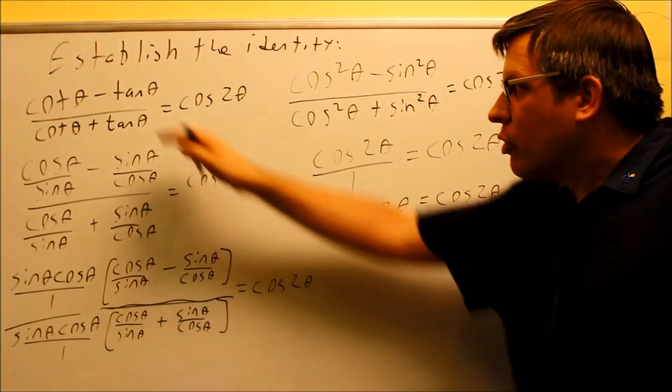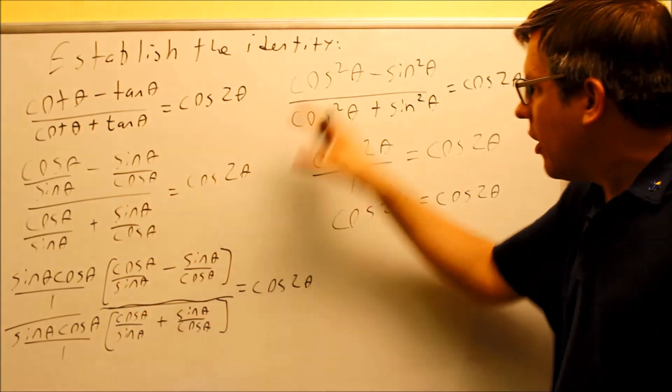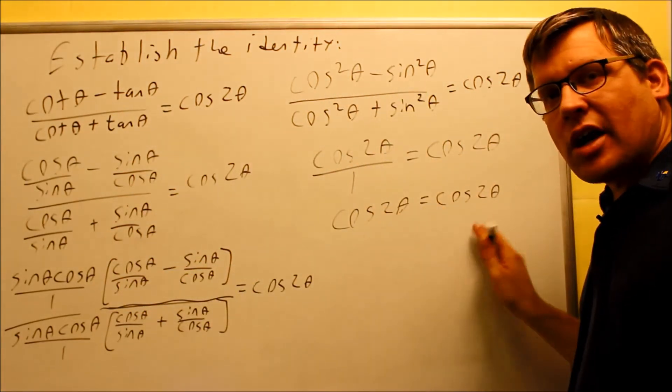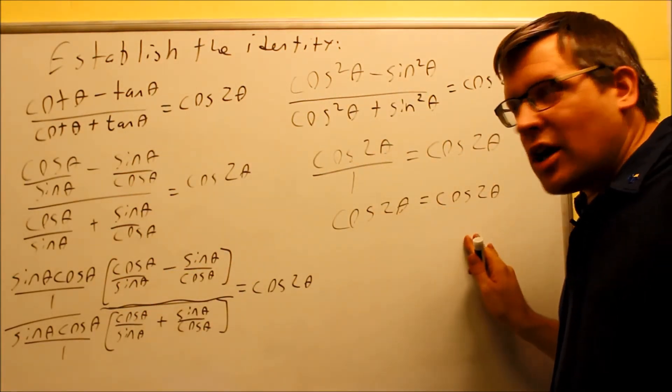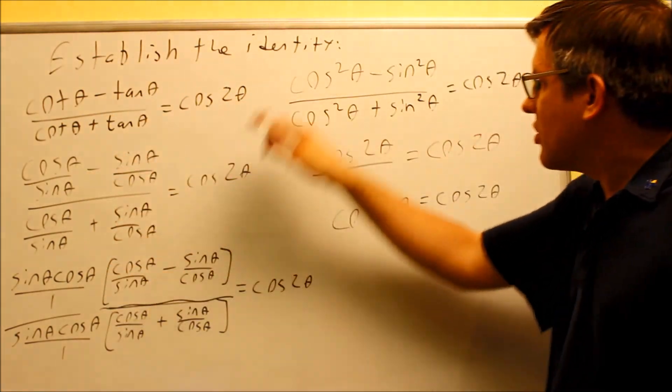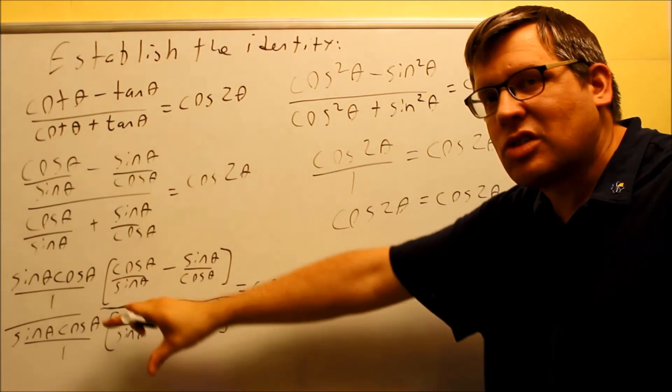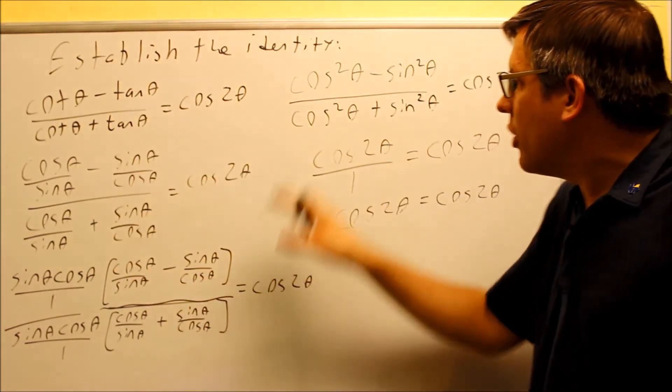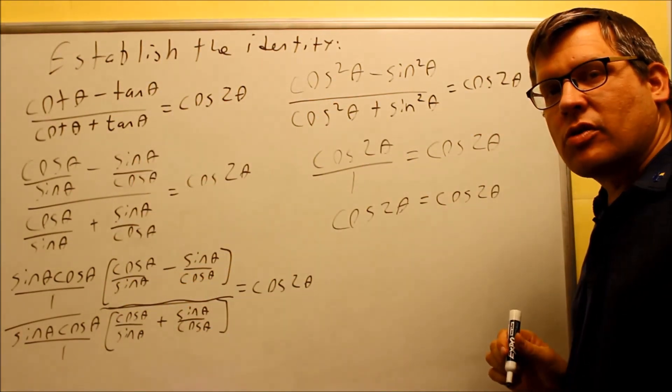So the idea here, again, you're working with one side, working all the way down until you get the left-hand side to equal the right-hand side, and your answer is actually your process showing how you get from one step down to the other. So you want to make sure you show these steps here, showing how you can work one side all the way down to where one side equals the other side.